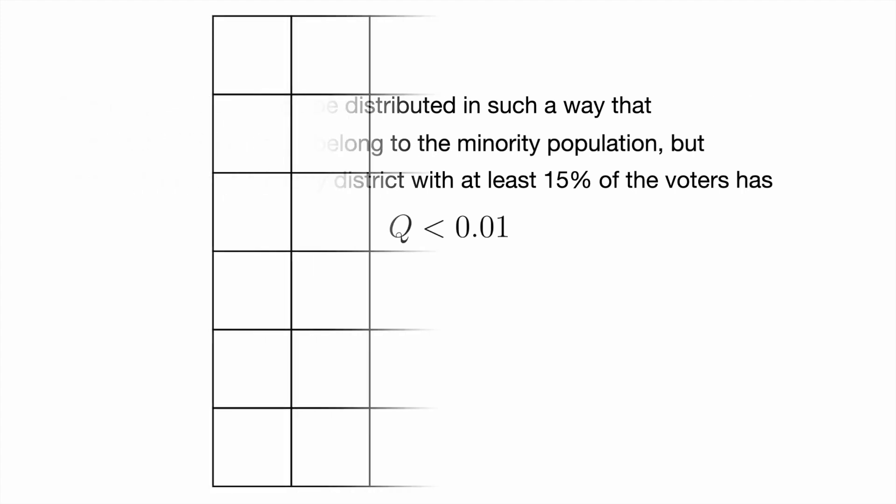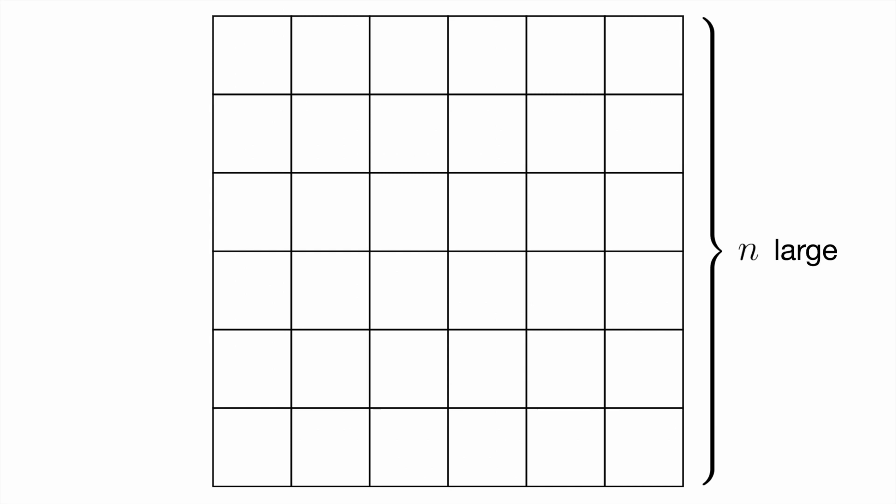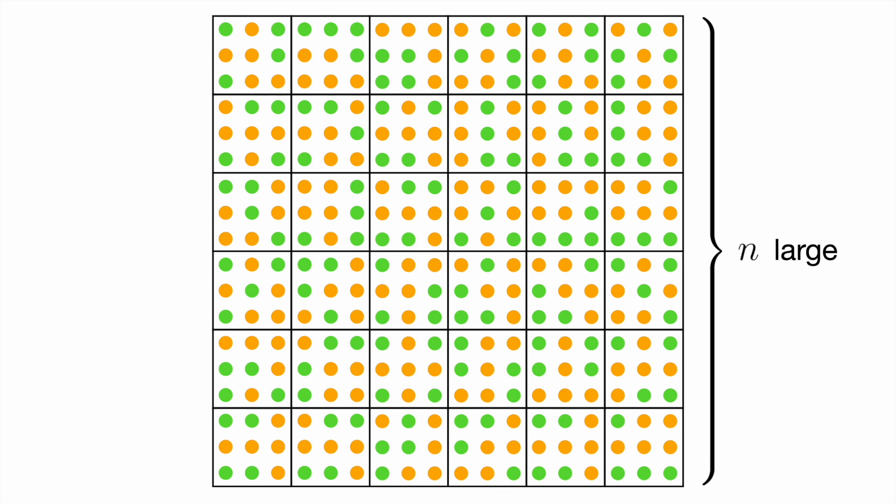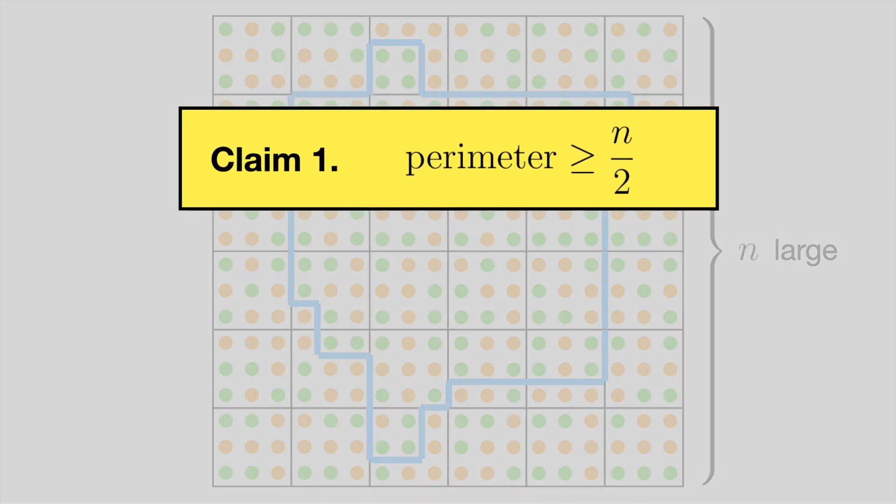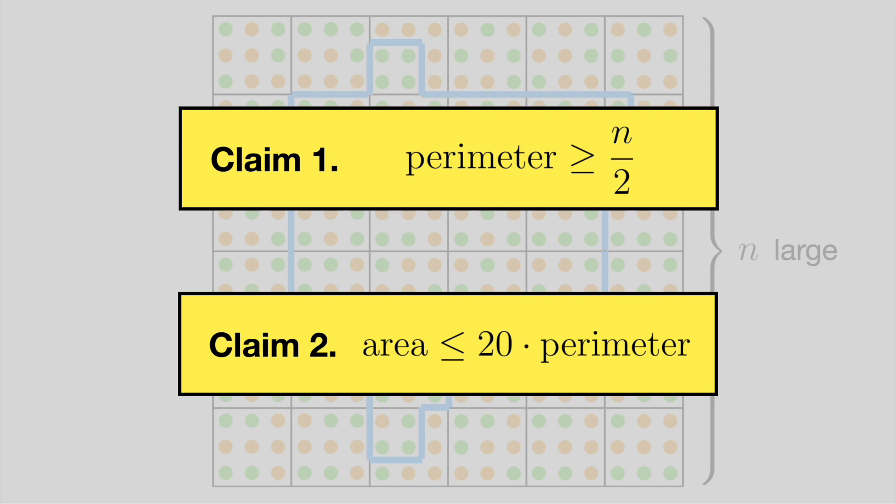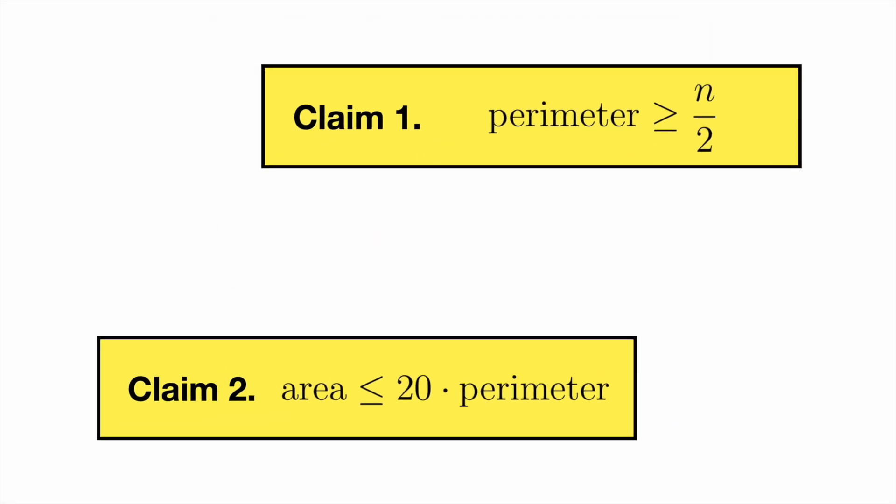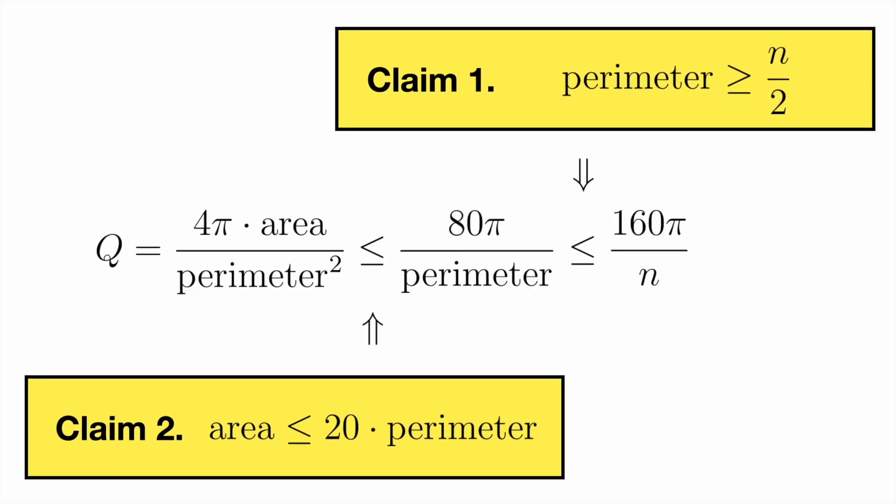Let n stand for a large integer, and consider an n-by-n grid of unit squares. Just like before, we put four green points and five orange points in each of these unit squares. Now, take any majority-minority district that contains at least 15% of the voters. We will demonstrate two things. First, the perimeter of this district is at least n over 2. Second, the area of this district is at most 20 times its perimeter. We can combine these claims to show that the Polsby-Popper score of our district is small, so our theorem is proved once we prove both of these claims.